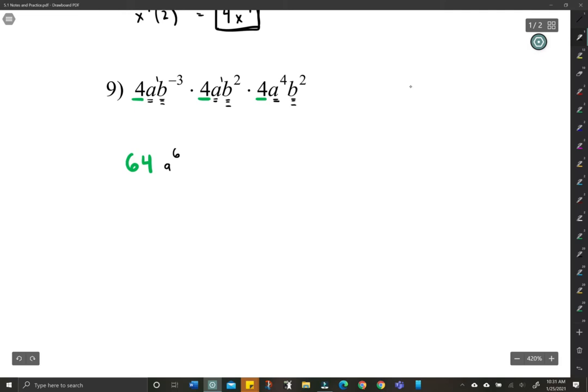Let's add the b's. I know there's a negative, but let's just take care of that later. Negative 3 plus 2 plus 2 is going to be to the 1st. And look at that. There's no extra things to do.